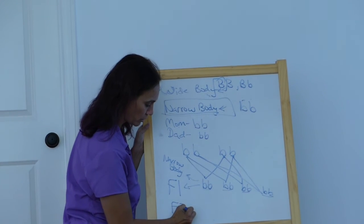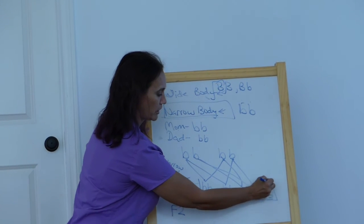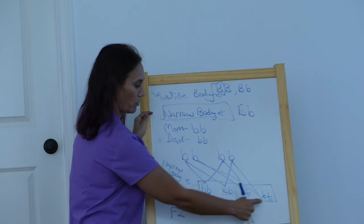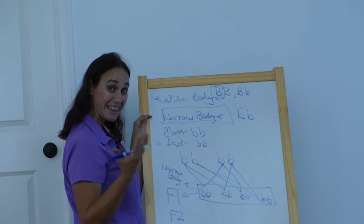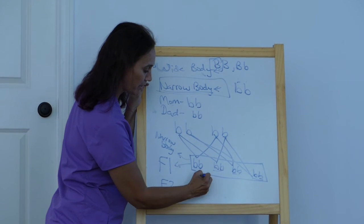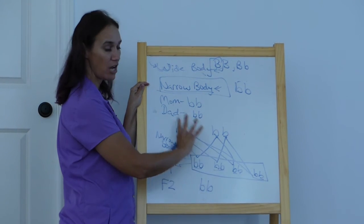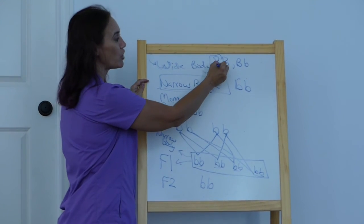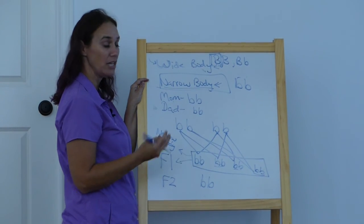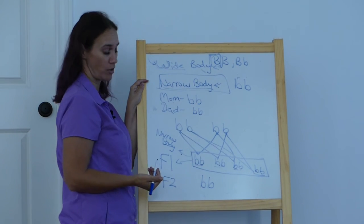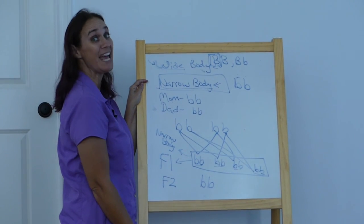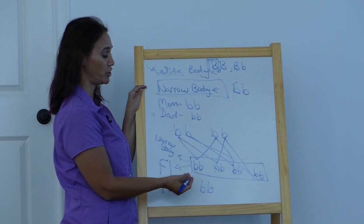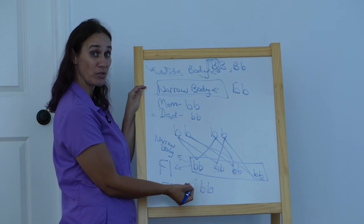Our F2 generation—the offspring from the F1 generation. If we breed this one and this one, or this one and this one, we're going to get the same thing. F2 generation is also going to be all bb. It doesn't matter how far down we go. We're always going to have narrow bodied mandrakes because there is never a dominant B allele in the mix. I could go all the way to the F 10 millionth generation and every offspring would still be narrow bodied with genotype bb and phenotype narrow body.